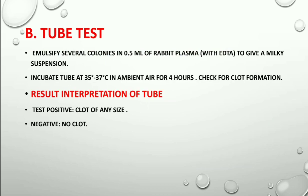For the tube test, emulsify several colonies in 0.5 ml of rabbit plasma to give a milky suspension. Then incubate the tube at 35 to 37 degrees Celsius for 4 hours. After 4 hours, check for clot formation.